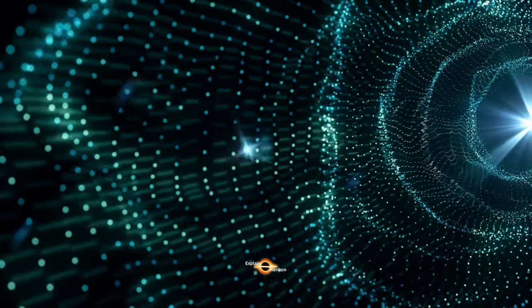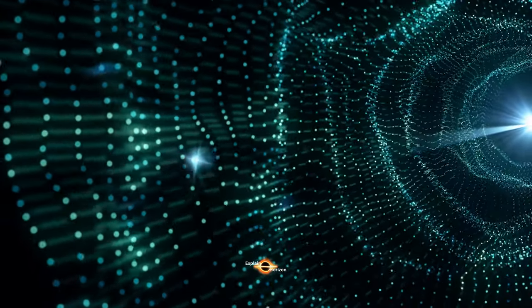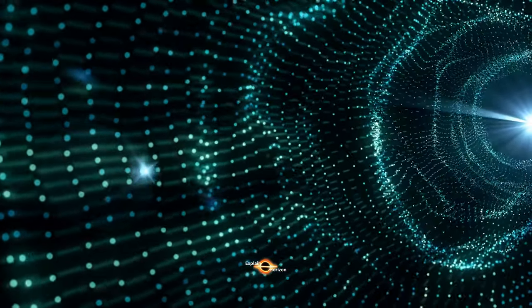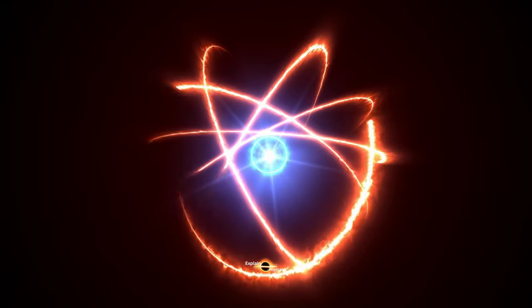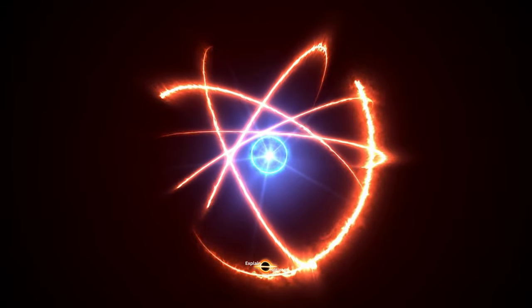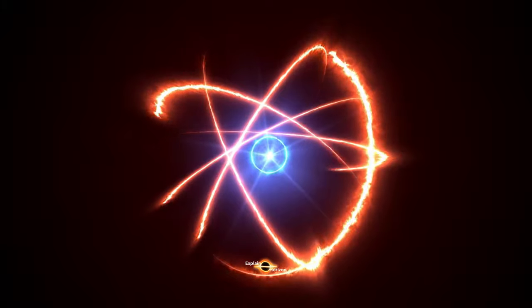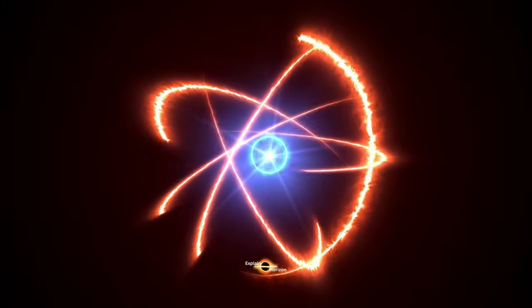The mathematics of wormholes is complex, and we don't fully understand it yet. We can only speculate about what's inside a wormhole. Some scientists believe that a wormhole would be filled with exotic matter, a type of matter with negative energy that's not found in our universe.